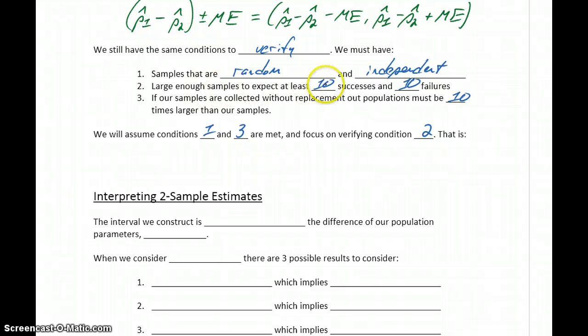Checking that we have 10 successes and 10 failures, except now we'll need to verify that for two separate sets of results. To do that, we can take our first sample size times our first sample proportion and verify that that's greater than or equal to 10, and then take our first sample times 1 minus our first sample proportion and verify that that's greater than or equal to 10. That'll tell us that we have at least 10 successes and at least 10 failures in one of the samples.